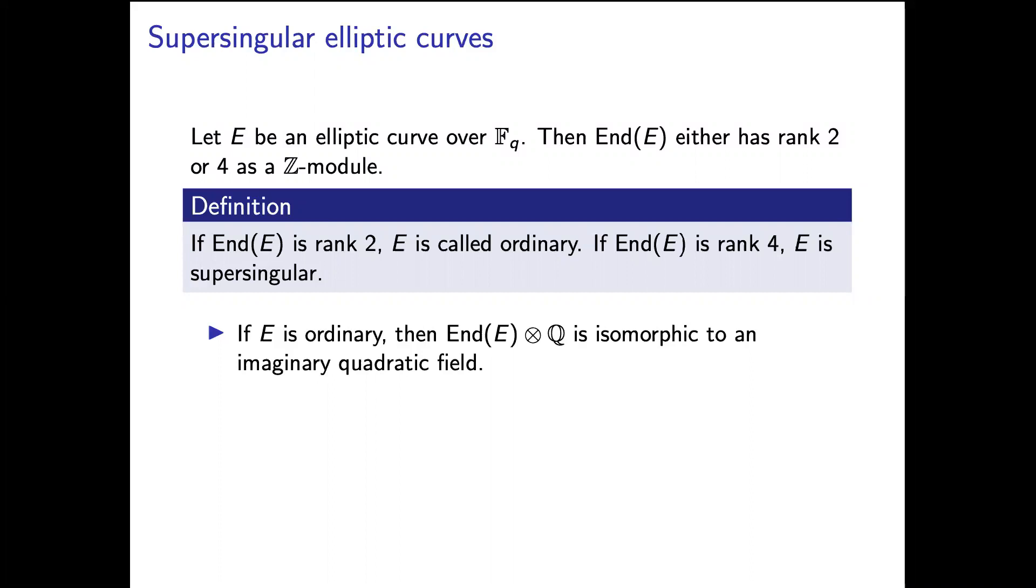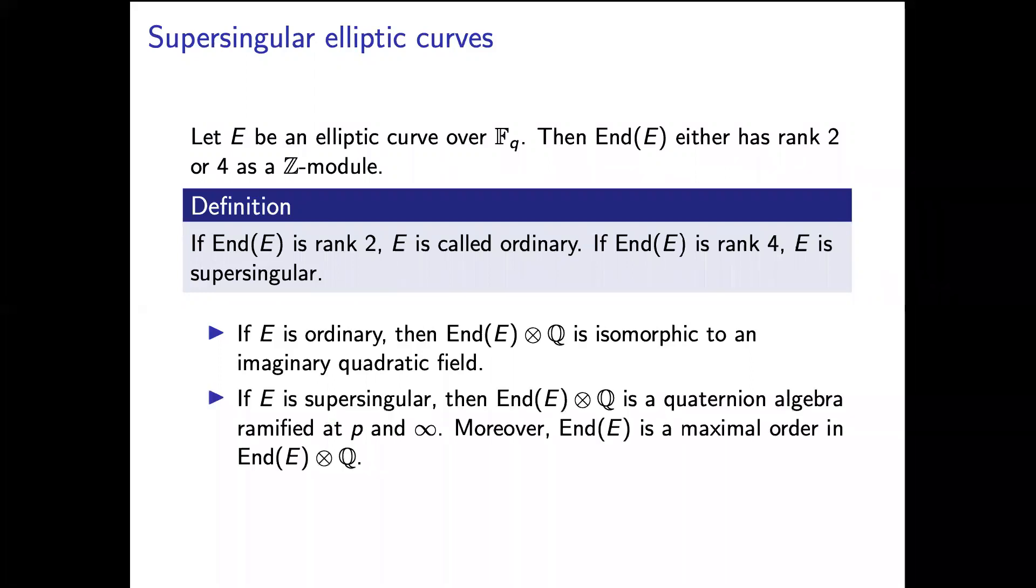When E is ordinary, its endomorphism algebra End(E) ⊗ Q is an imaginary quadratic field. On the other hand, if E is supersingular, then its endomorphism algebra is a quaternion algebra ramified exactly at the prime p, which is the characteristic, and infinity.